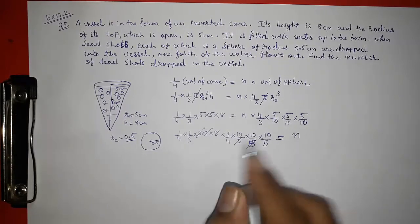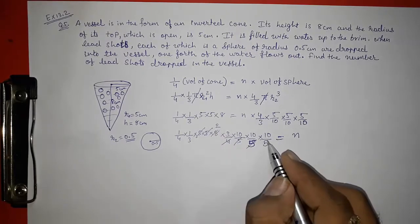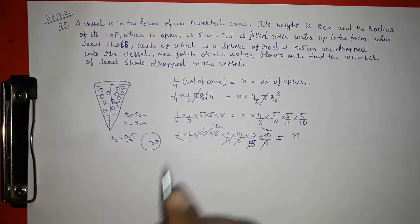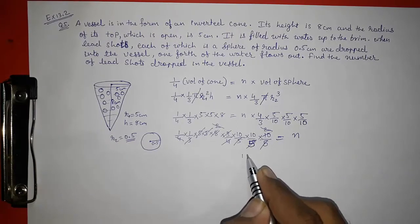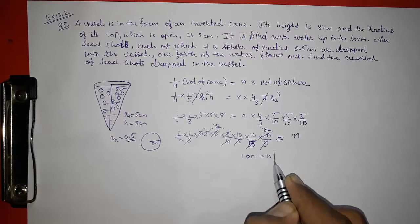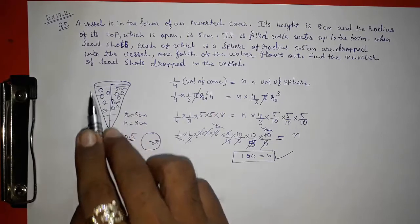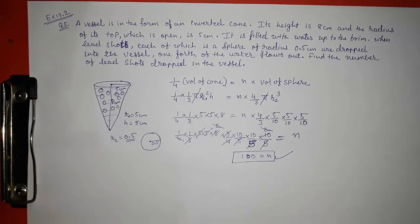After cancellation, the 5s cancel, the 3s cancel, and the 4s cancel, leaving 10 × 10 = 100. So n = 100. The number of lead shots dropped into the vessel is 100, which causes one-fourth of the water to flow out. Thank you so much for watching. If you like it, please subscribe to my channel.